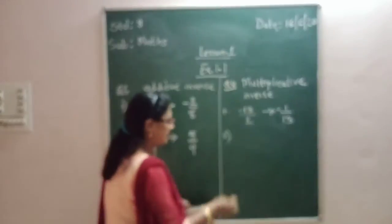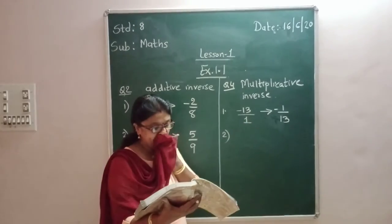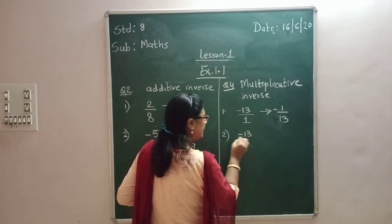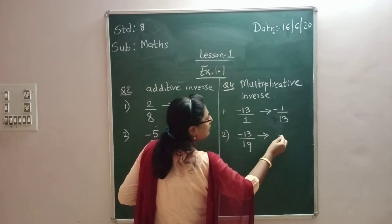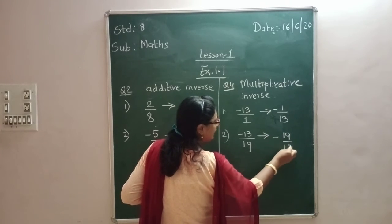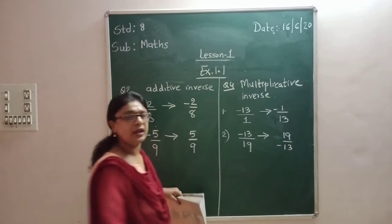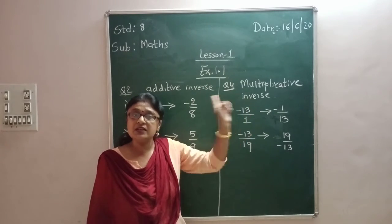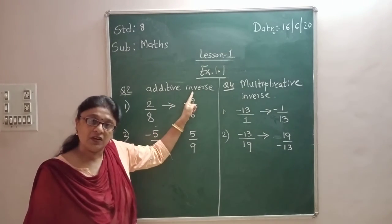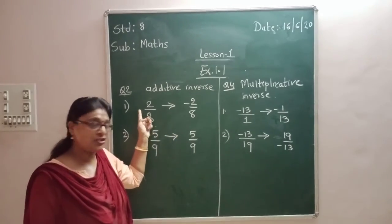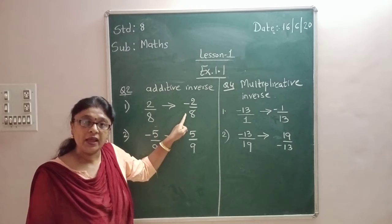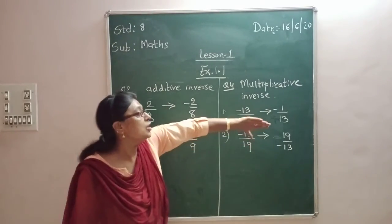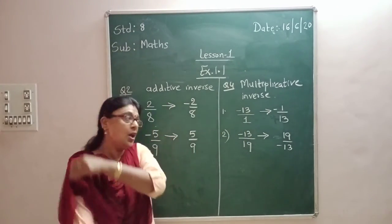Then see the second one: minus 13/19. The multiplicative inverse is minus 19/13, or equivalently 19 upon minus 13 — both are the same. So what is the difference between additive inverse and multiplicative inverse? In additive inverse, the sign changes: positive becomes negative. In multiplicative inverse, the sign remains the same and you take the reciprocal.